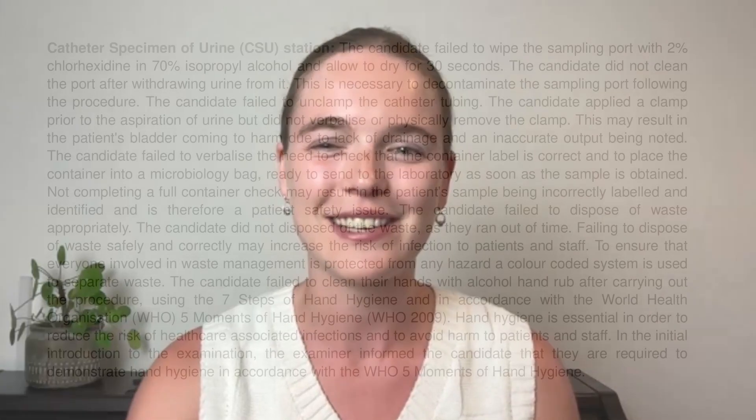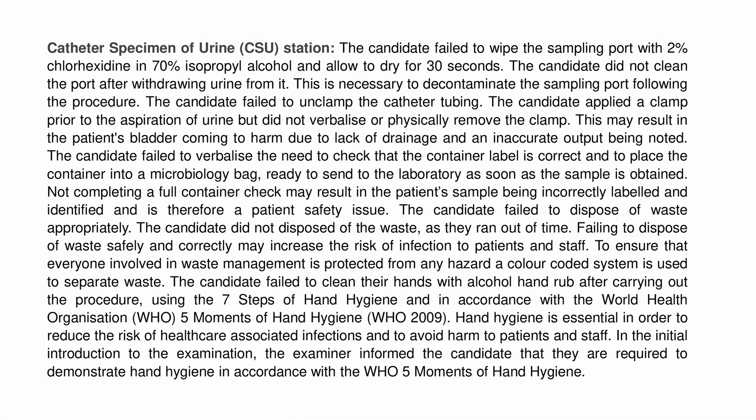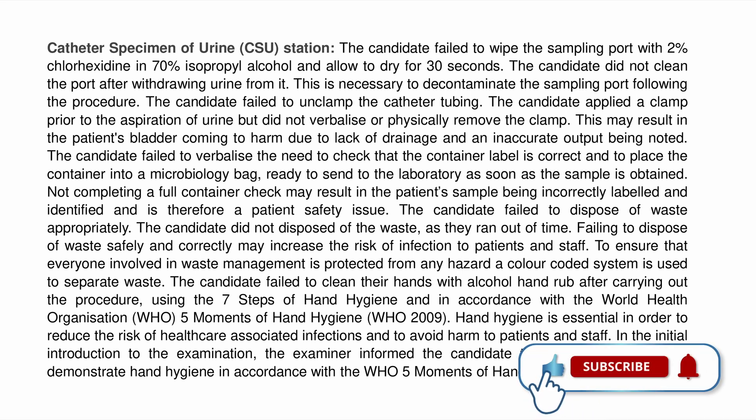Let's get started with our first example. Example one for episode 32 comes from the catheter specimen of urine station. The candidate failed to wipe the sampling port with 2% chlorhexidine in 70% isopropyl alcohol and allowed it to dry for 30 seconds. The candidate did not clean the port after withdrawing urine from it. This is necessary to decontaminate the sampling port following the procedure. The candidate also failed to unclamp the catheter tubing. The candidate applied a clamp prior to aspiration of urine but did not verbalise or physically remove the clamp. This may result in the patient's bladder coming to harm due to lack of drainage and an inaccurate output being noted.